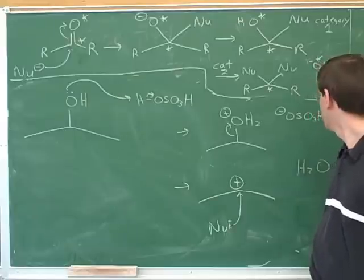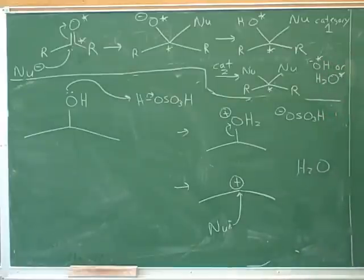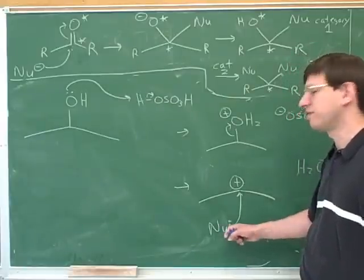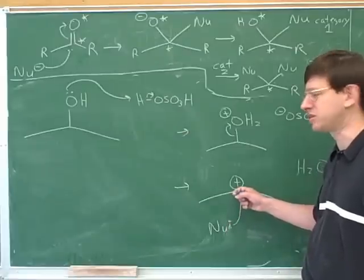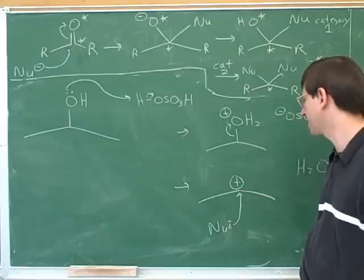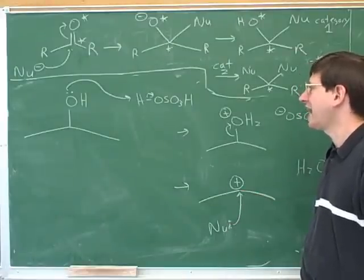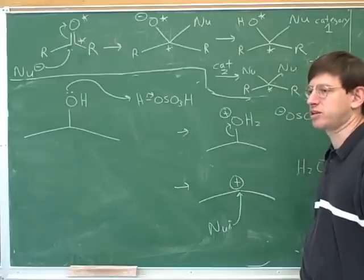Because we're going to have the HSO4 minus. Okay, good. So, and now, again, we could get by with a relatively weak nucleophile or base because of this big positive charge here. So this might just be a neutral nucleophile. It's still going to be able to attack a carbocation. So the key point here is, again, acids give you better leaving groups and electrophiles.